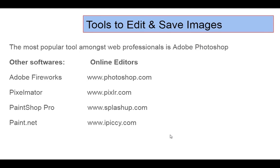Raw images need to be converted to the right size, resolution, and format. Tools used by web professionals include Adobe Photoshop, Adobe Fireworks, Pixelmator, Paint, and Paint.NET. Adobe Photoshop is the most popular tool used by web professionals. For small tasks, online editors like Photoshop.com, PixlArt.com, Splashup.com, and iPiccy.com are also available.